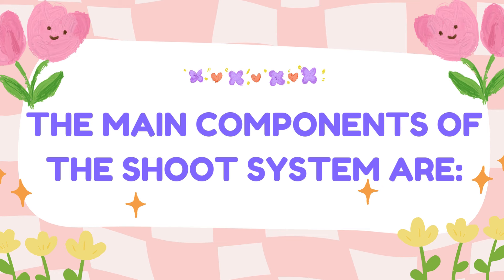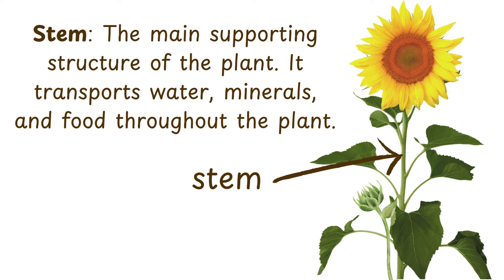The main components of the shoot system are: Stem — the main supporting structure of the plant. It transports water, minerals, and food throughout the plant.